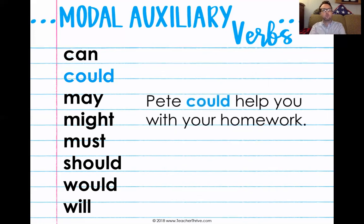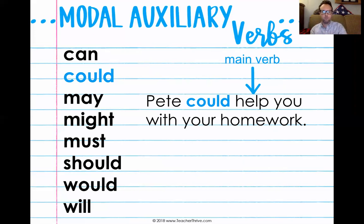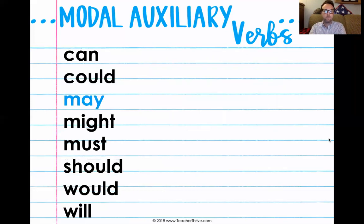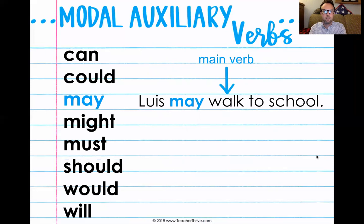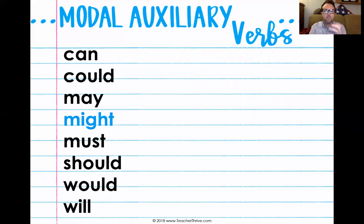With 'could': Pete could help you with your homework. Help is the main verb, but 'could' shows that he has the ability to help — not that Pete is currently helping with your homework, but that he can, he has that ability. With 'may': Luis may walk to school. That shows that Luis does have the ability to walk — walk is our main verb — but he might do it, he might not do it. He has that ability.